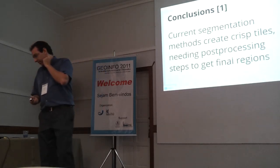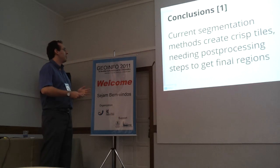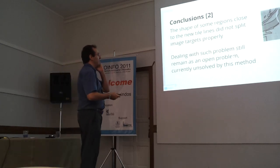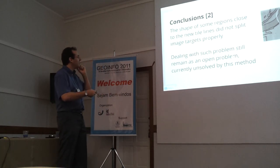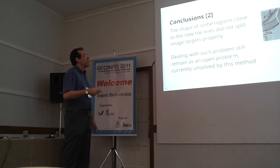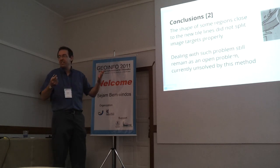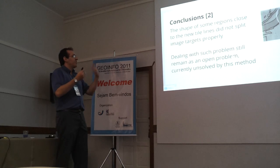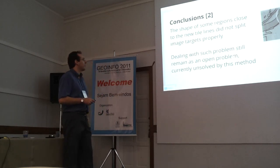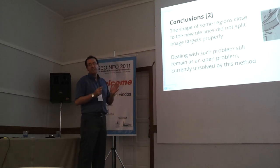In conclusion, current segmentation methods create crisp tiles and require post-processing steps to obtain the final regions. However, a limitation of our work is that the shape of some regions close to the new lines defined by our algorithm did not split image targets properly — when the line crosses a homogeneous area, it finds the nearest available border, which may not be ideal. Since we avoided post-processing, we could not merge these absent segments. Dealing with such problems remains an open issue for future work.